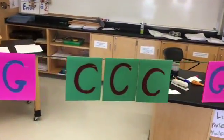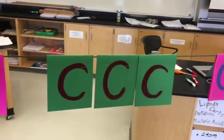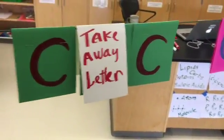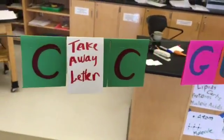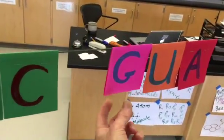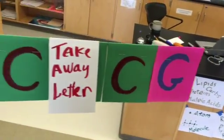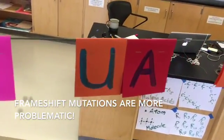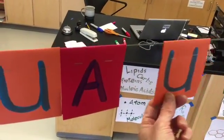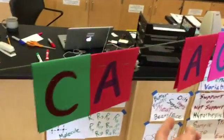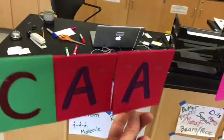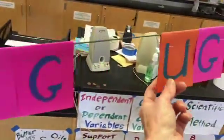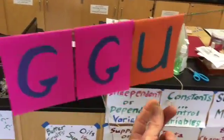Frameshift mutations can also result in the deletion of a letter by mistake. In this example I'm going to remove a letter. So now to form a codon I have to steal a letter from downstream. Instead of having CCC I now have CCG, and letters are redistributed from downstream to make up the codons. Like in the other example, this will change every amino acid sequence downstream of the site of the mutation.